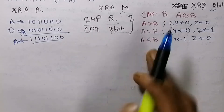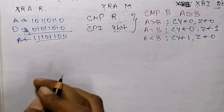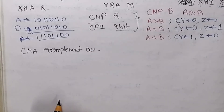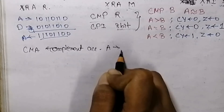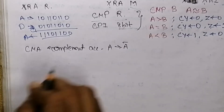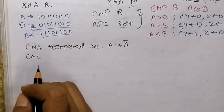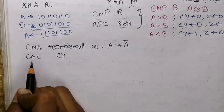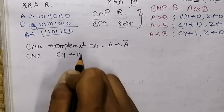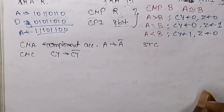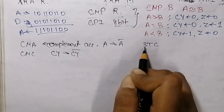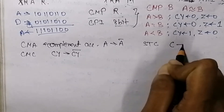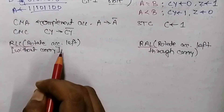For complementing the content of the accumulator, we have instruction CMA, which converts accumulator A into its complement A-bar. We also have the CMC instruction, which complements the carry flag — if the carry flag is CY, executing CMC converts it to CY-bar. Additionally, STC is used to set the carry flag to 1, meaning after executing STC the carry flag will always contain 1.